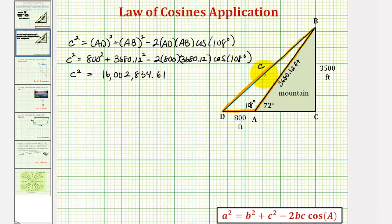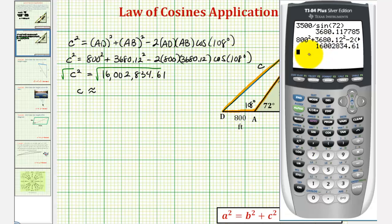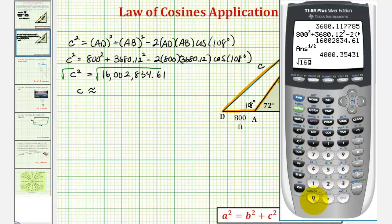And now we know C is a length, so C has to be positive. So we'll take the principal square root of both sides of the equation. And now we'll go back to the calculator. Remember, taking the square root is the same as raising something to the one-half power. So because we have this value already in the calculator, we could just press the exponent key of the caret, and then raise the previous answer to the one-half power and enter. Either way, C is approximately 4,000.35 feet.